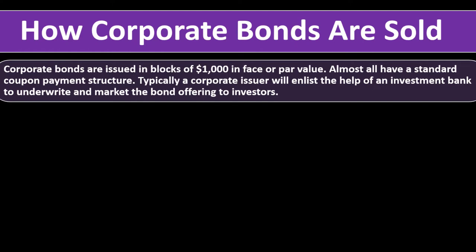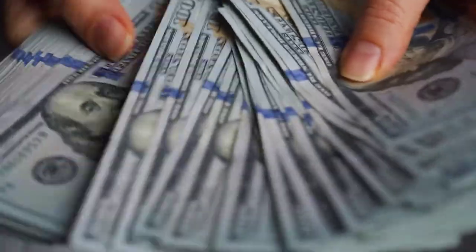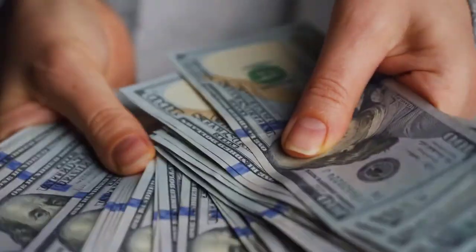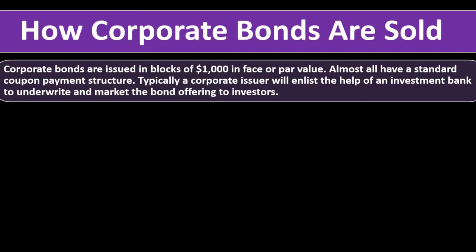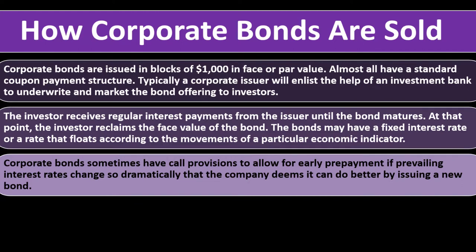Corporate bonds are issued in blocks of $1,000 in face or par value. Almost all have a standard coupon payment structure, so you can think of a future stream of cash flows consisting of interest payments plus the face value returned at maturity. A corporate issuer will typically enlist an investment bank to underwrite and market the bond offering to investors. The investor receives regular interest payments from the issuer until the bond matures, at which point they reclaim the face value. Bonds may carry a fixed interest rate or a floating rate tied to an economic indicator.